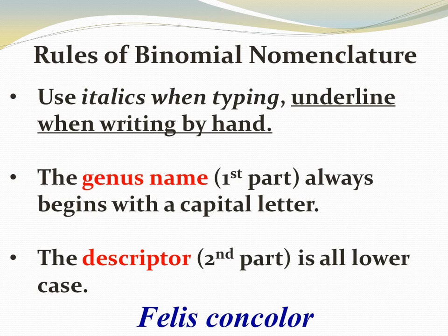Scientific names are written following the rules of binomial nomenclature — a two-part naming system. When typing a scientific name, use italics; if you hand-write it, it should be underlined. The genus name, which is the first part, always begins with a capital letter. The second part is the descriptor and is always written in lowercase. For example, Felis is capitalized and concolor is all lowercase, and the whole name is typed in italics.